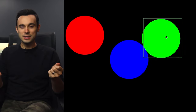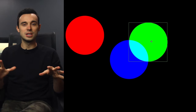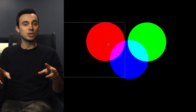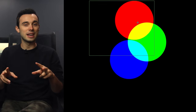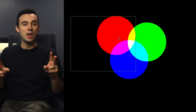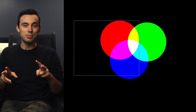If we point these at the wall separately we'll see their colors individually, but as they start to overlap we'll start to notice the interactions between the lights as they add together. And when all three beams overlap we get white. This is additive color and this is how LED screens work.